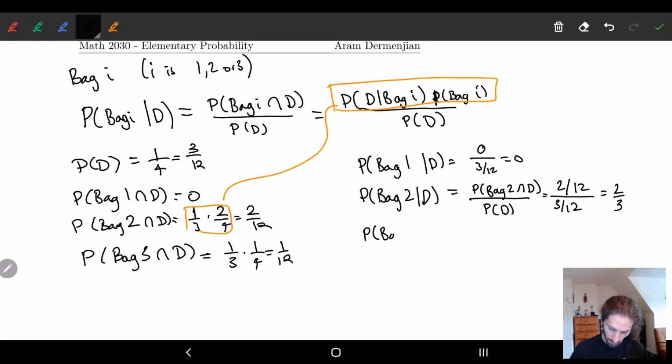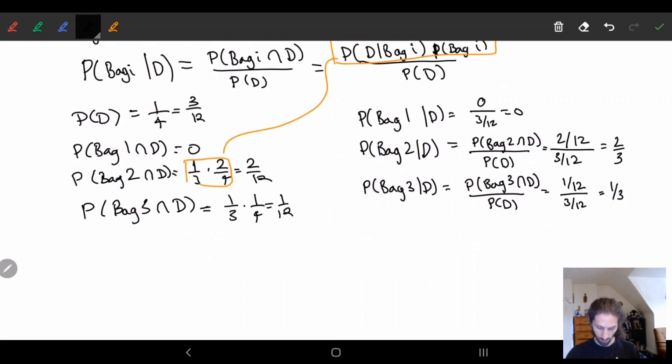Finally we can look at probability of bag three given dark. This is just like the previous one. Bag three intersect dark chocolate over probability of D is equal to one twelfth over three twelfths is equal to one third. So we know the probability for each one.